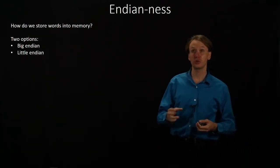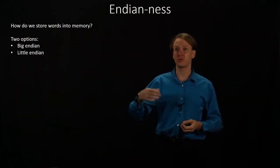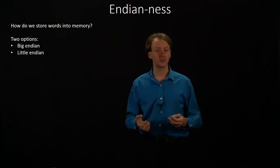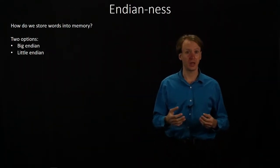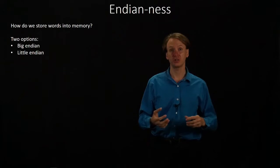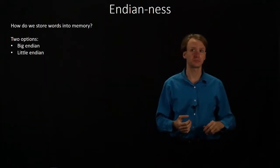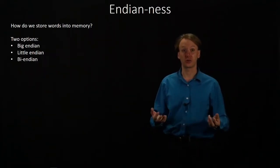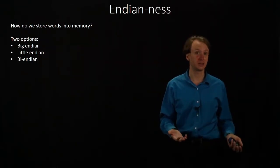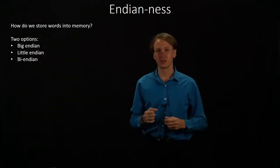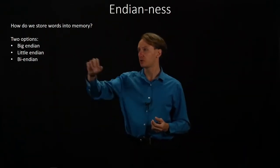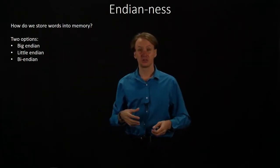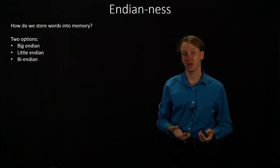We have two options: we can have a Big Endian system or a Little Endian system, each of which will have a different way of arranging those bytes in memory. We can actually have a third option — a Bi-Endian system, which can operate as either a Big Endian or a Little Endian system, just depending on what the operating system would like to use.